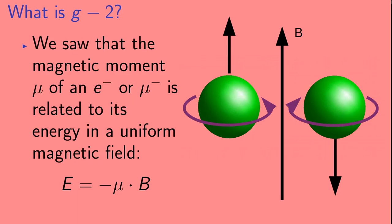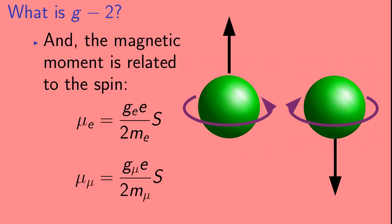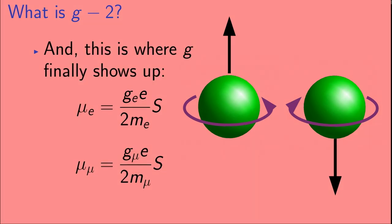So we saw that the magnetic moment mu of an electron or muon is related to its energy in a uniform magnetic field. The energy E is equal to minus the magnetic moment mu dotted into the magnetic field B. And we also saw that the magnetic moment is related to the spin. In both the electron and muon cases, the magnetic moment is proportional to the spin and to the charge. And this is also where the factor G shows up. In the magnetic moment of the electron, we have a factor of GE. And in the magnetic moment of the muon, we have a factor of G mu.